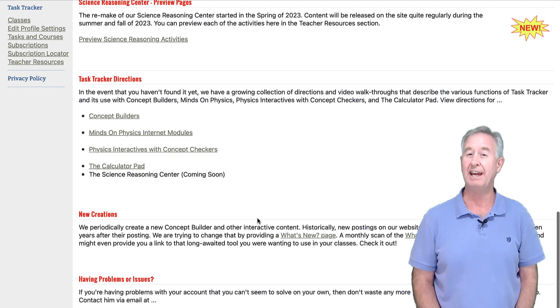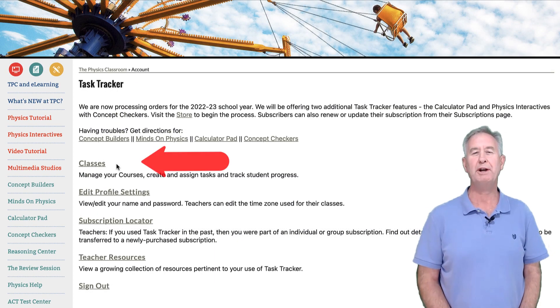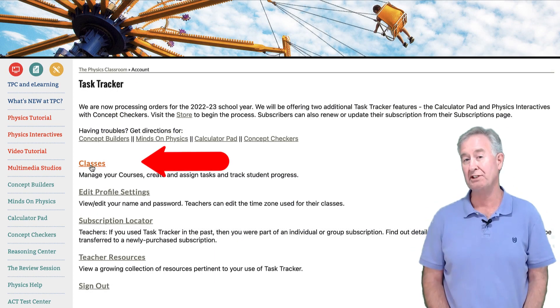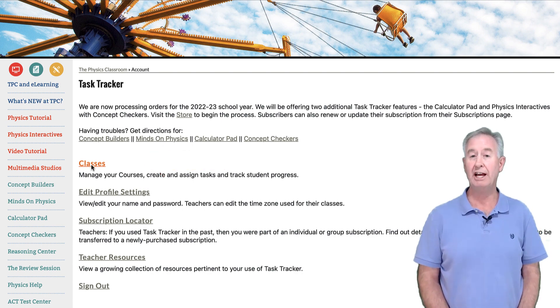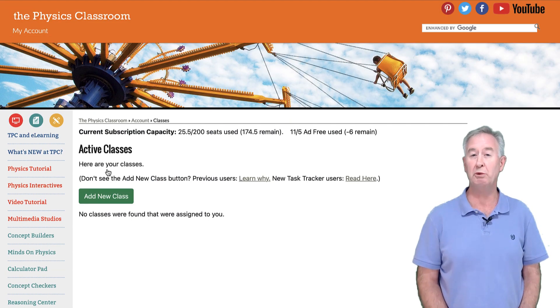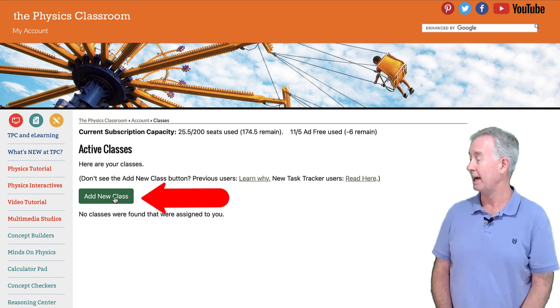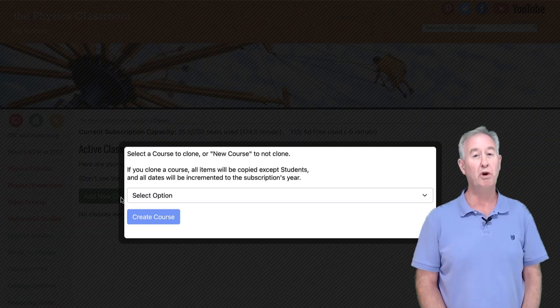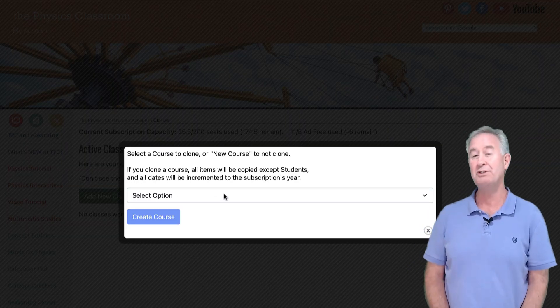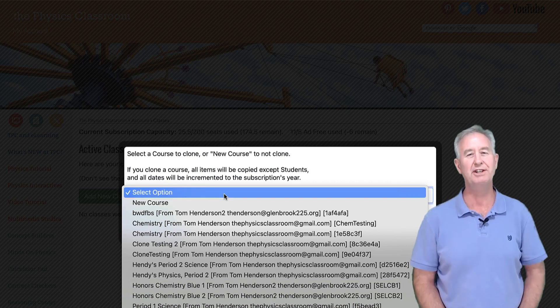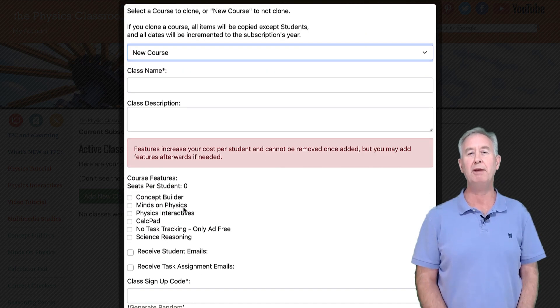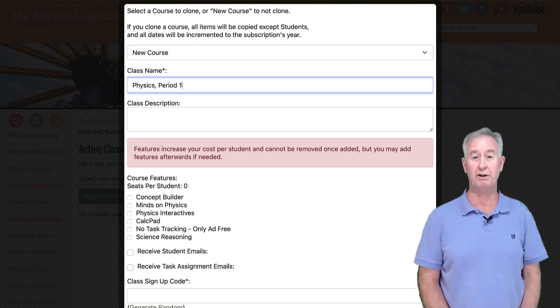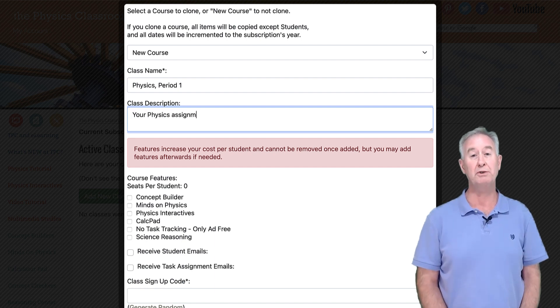Now let's learn how to create a class. From your account page, click on the Classes link. This takes you to your Classes page where all your classes will be listed. Tap on the Add New Class button and a form appears. From the pull down, select New Course at the top of the list. Now type in a name and a description for your class. This will appear on students' assignment boards, so make sure it's meaningful.